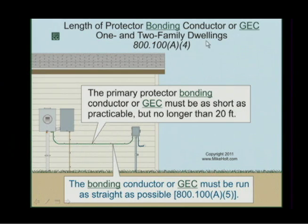The rule is, in one or two family dwellings, this bonding conductor to the inter-system bonding terminal can't be longer than 20 feet. Why limit the length? Because you get the telephone grounded at one location at the utility, the cable grounded in one location, the building grounded in one location. A lightning event creates a voltage gradient resulting in a difference of potential. We want to bring them all to the same potential by bonding them together. But if you run a conductor longer and longer between the two systems, even though you're trying to bring them to the same potential, it will never get it to zero.